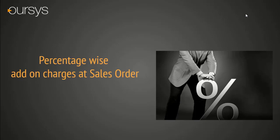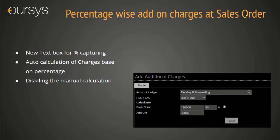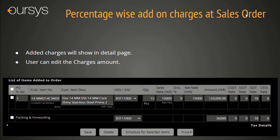Percentage-wise Add-on Charges at Sales Order level. This new feature is introduced in inquiry and order registration level. Once you click on the Add Charges button, you can see a percentage field and amount field with the basic total for calculation. If you update the percentage in that box, system will calculate the amount on the basic total. For example, we have entered 30% and system calculated Rs. 36,000 on a basic total of Rs. 1,22,000. After saving, in the detail level you can see the charges amount with the duty percentage. If HSN is selected, system will allow the user to change the amount value if the requirement changes.